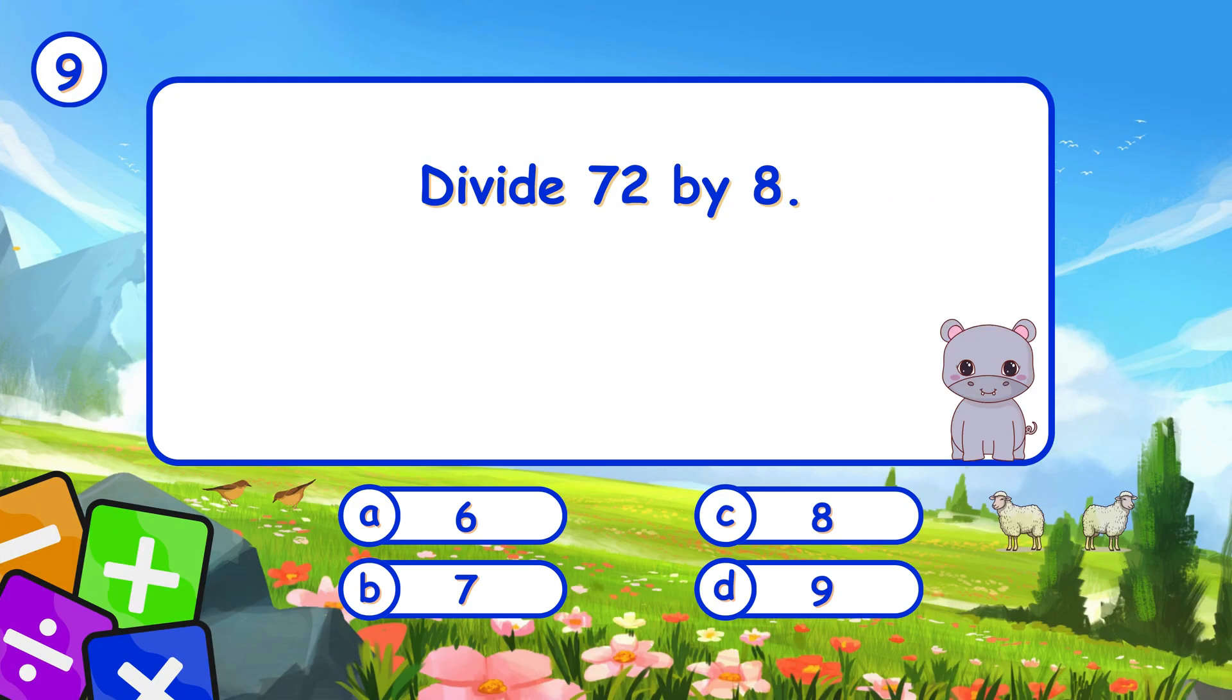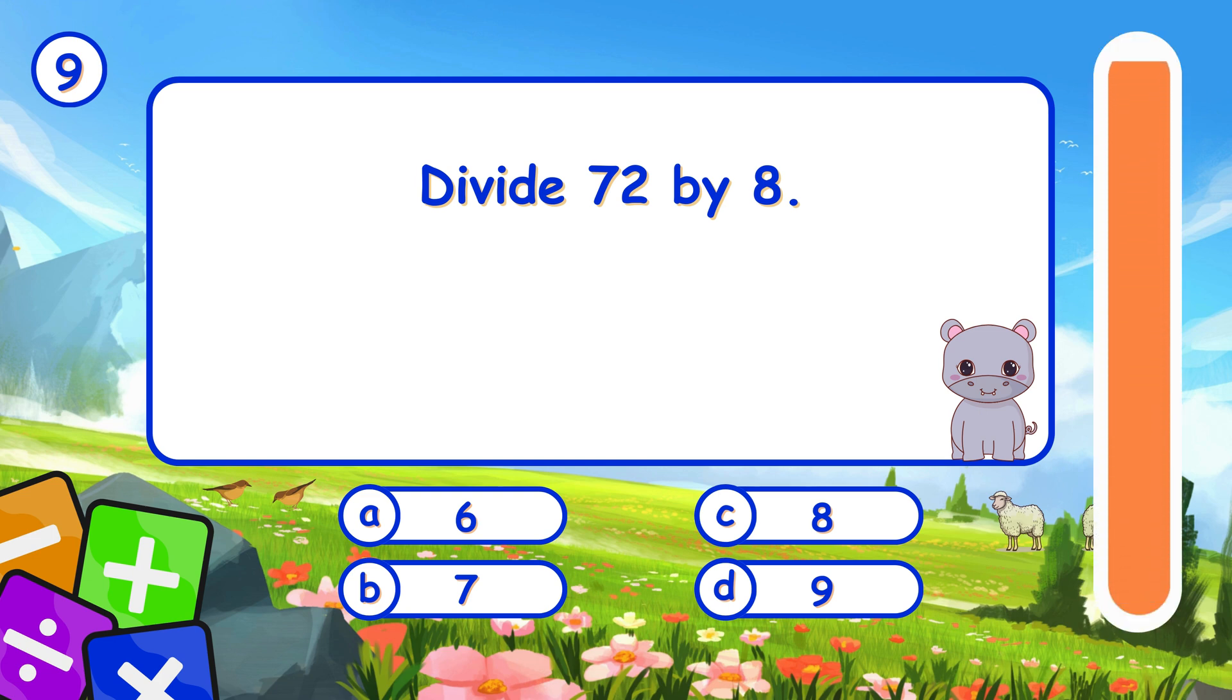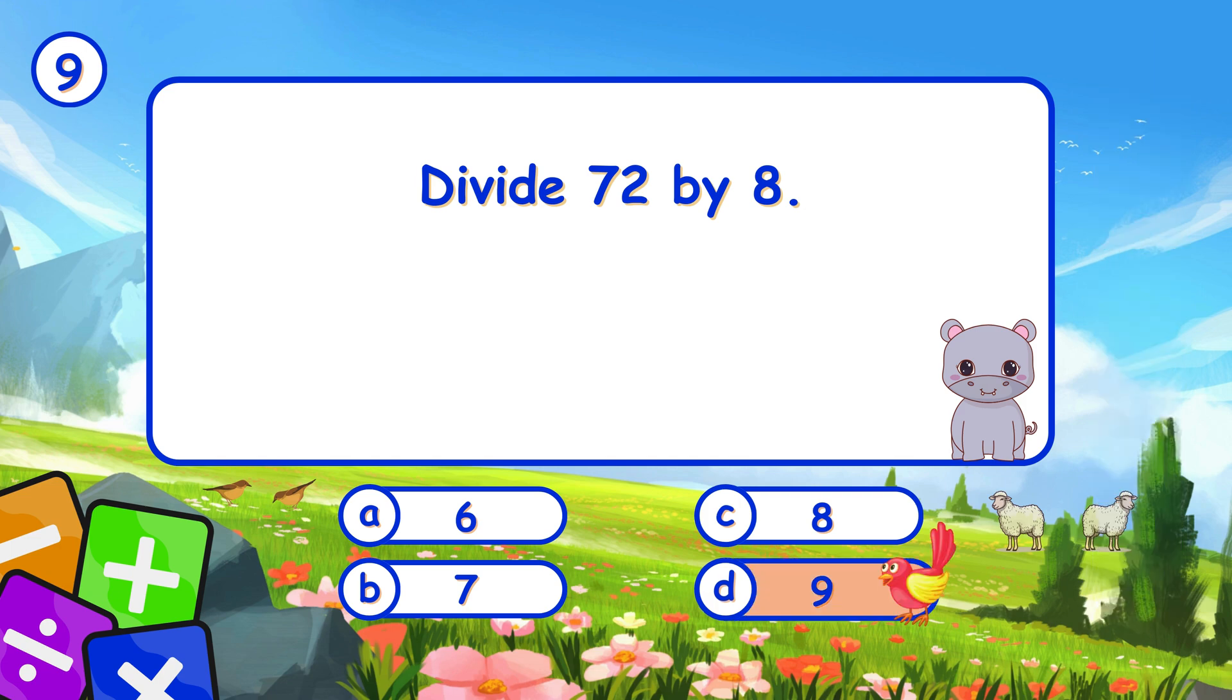Divide 72 by 8. It's D, 9. 72 divided by 8 is 9.